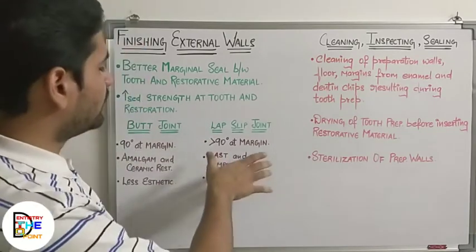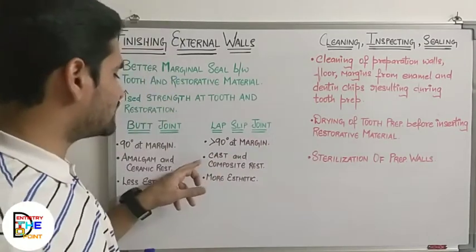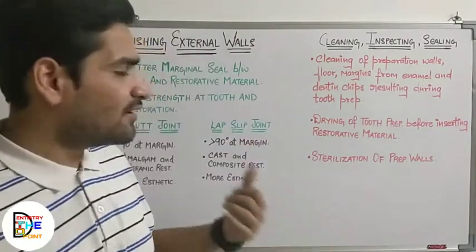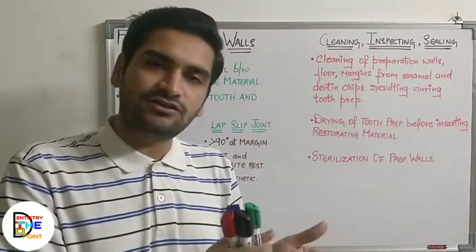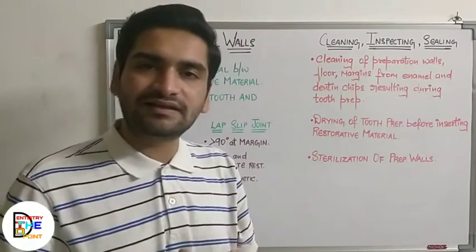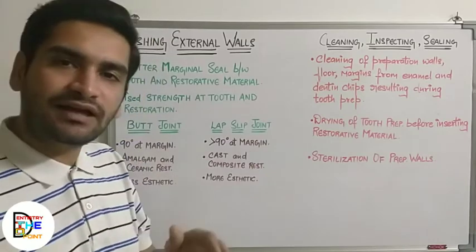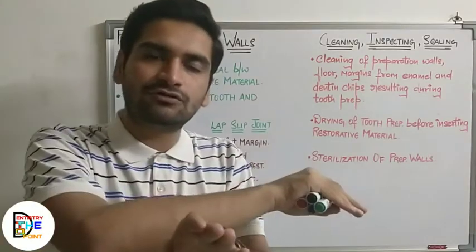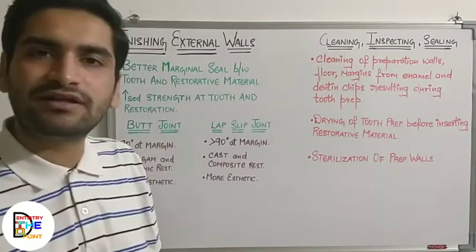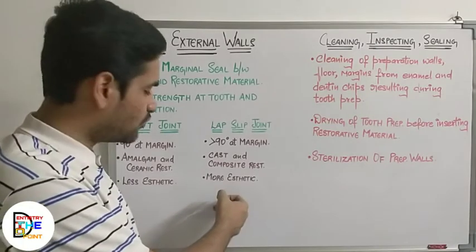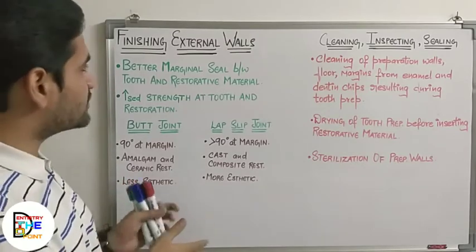Compared to the butt joint, the lap or slip joint has an angle more than 90 degrees and is seen in cast and composite restorations. During composite restoration, you need to bevel the external margin of the preparation to provide closer adaptation of the restoration with the tooth, so it merges properly, preventing micro leakage, and providing enough retention, resistance, and aesthetics.